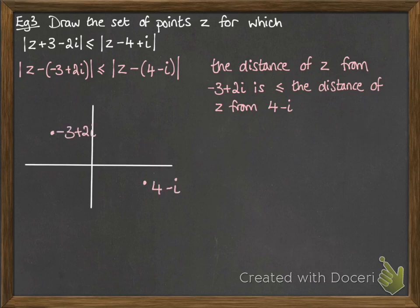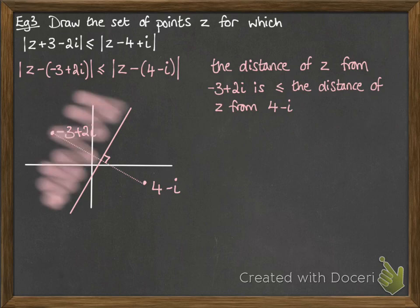So we've got our two points. If we want to know all of the points where they would be equal to each other, the distance between it would be equal, then we'd be looking for the perpendicular bisector here. We want it to always be closer to the minus 3 plus 2i, so we shade in this side. That's the side that we want to keep.